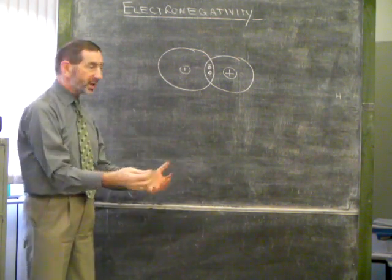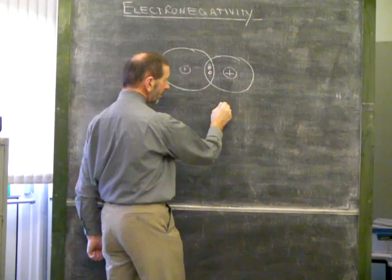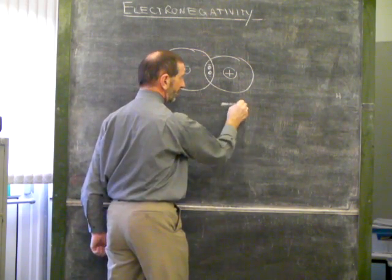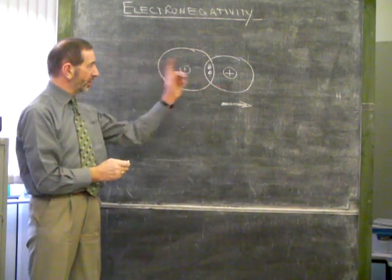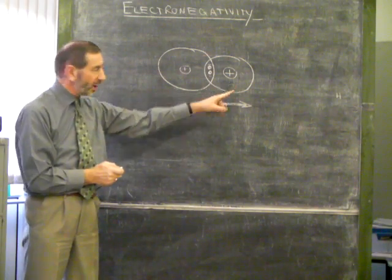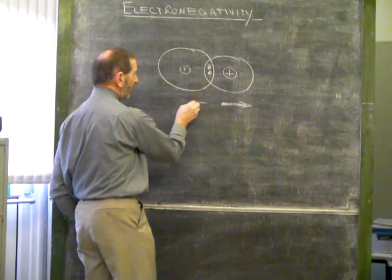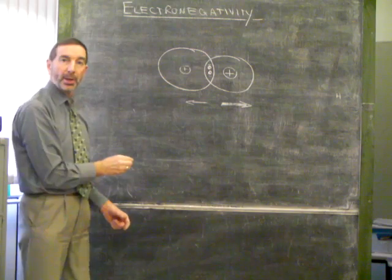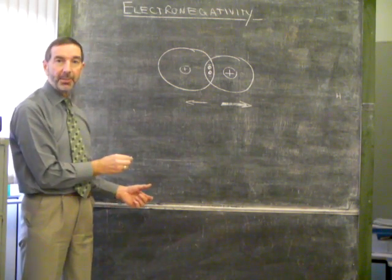To try to convey this idea, we use arrows. A large arrow going in this direction implies a strong attraction towards a large positive charge, and a smaller arrow pointing in this direction implies a smaller attraction. It's a bit of a chemical tug of war.